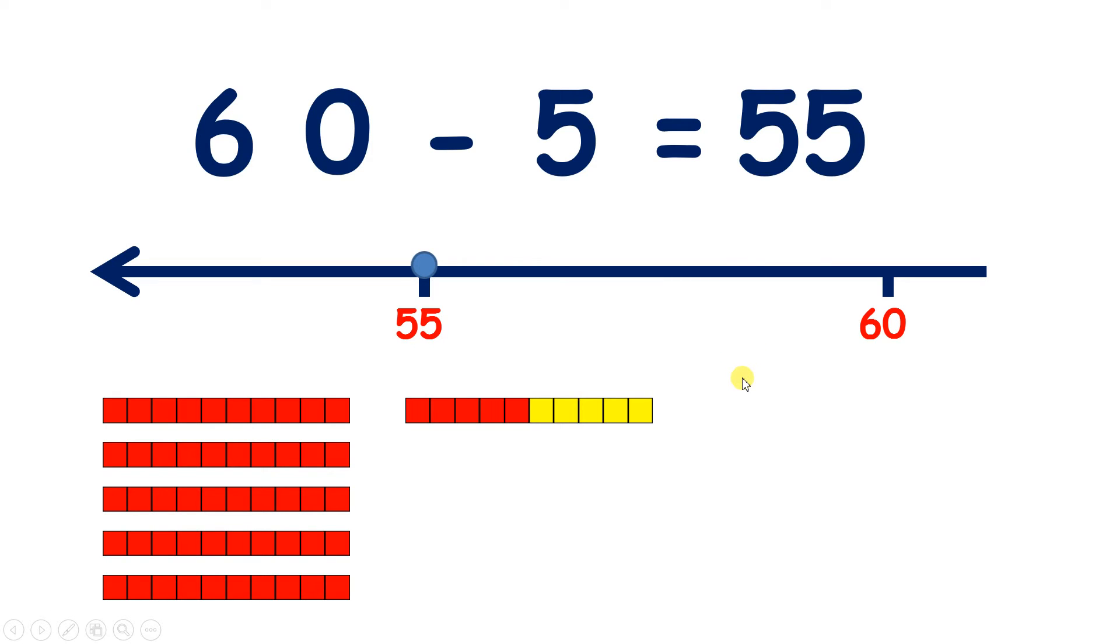So when we're subtracting units from a multiple of 10, the tens digit is always 1 less, so here 5 is 1 less than 6, and the units digit will be the number bond to 10. So with 5, the number bond to 10 is also 5, so that's why we have 5.